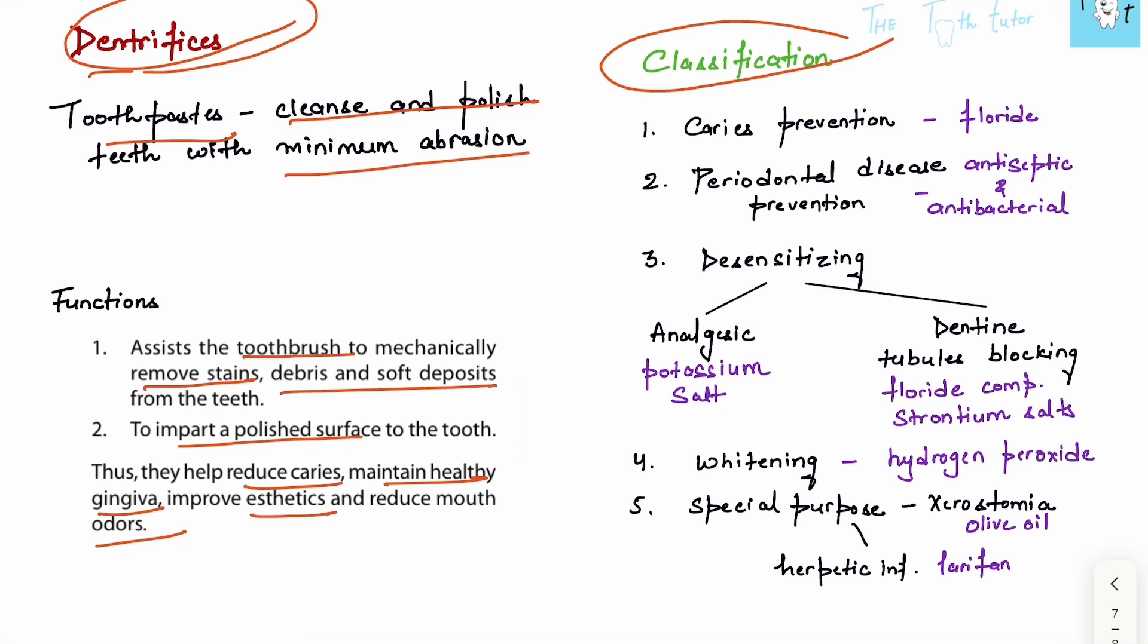What is the classification? It's based on the use of the toothpaste. The first type is for caries prevention and contains fluoride. The second type is for periodontal disease prevention, containing antiseptics and antibacterial agents, both synthetic and natural.